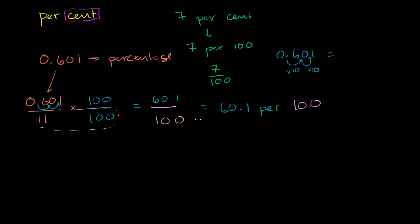Which is the same thing as 60.1 per cent. And we'd obviously want to write it then as 60.1 per cent, as one word. Or 60.1, and we'll just use the symbol, 60.1 per cent. We are done.